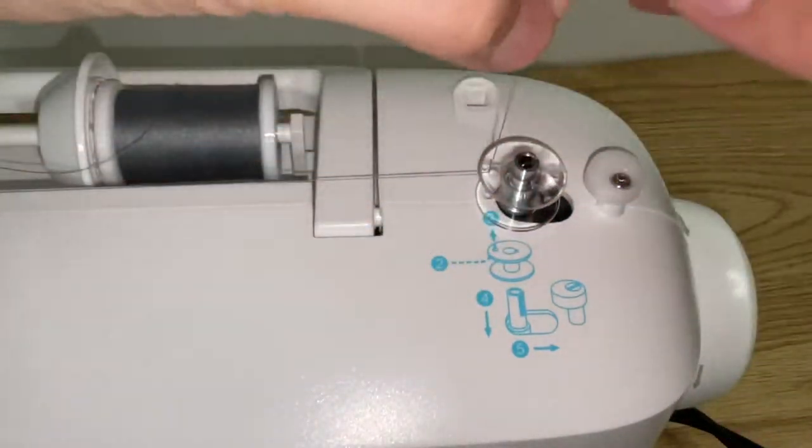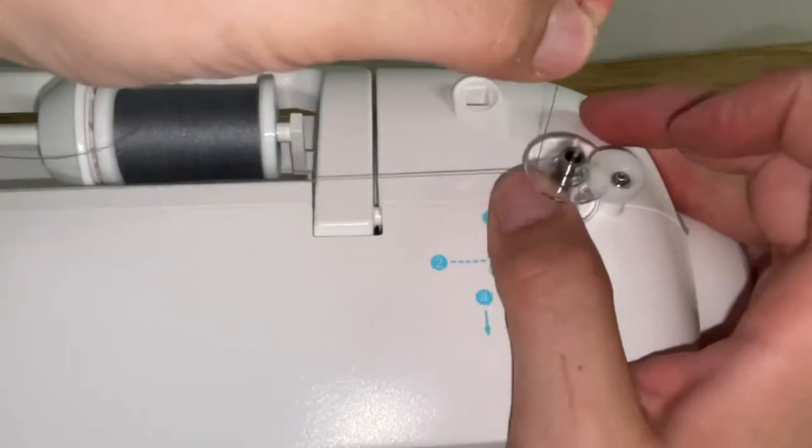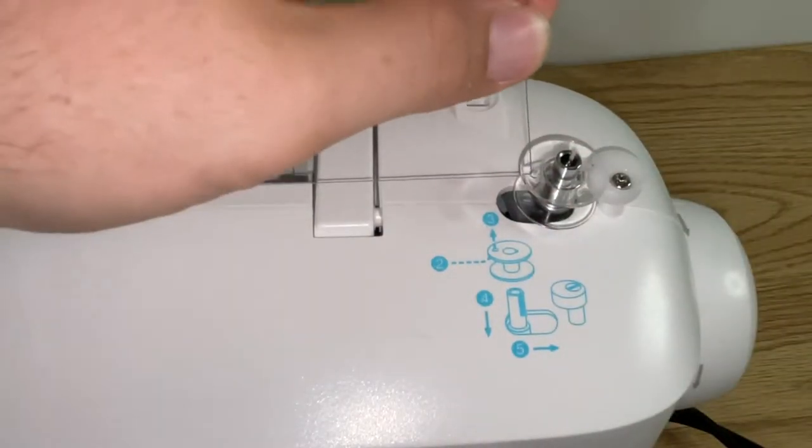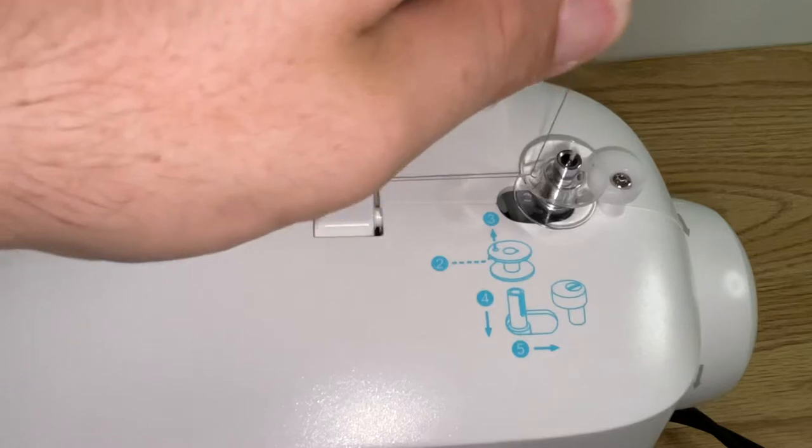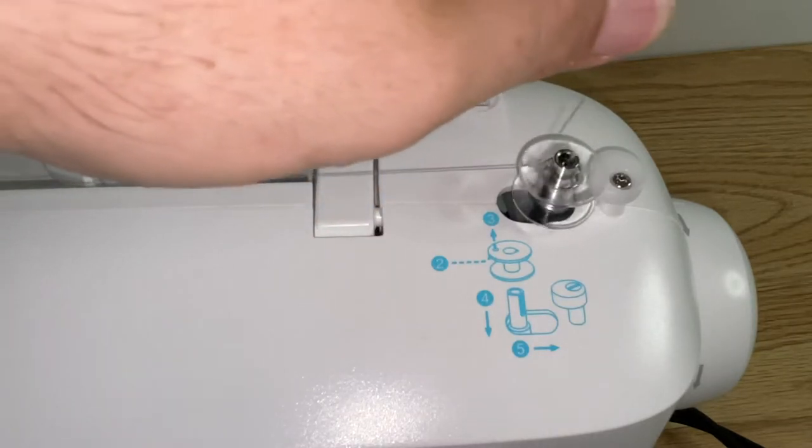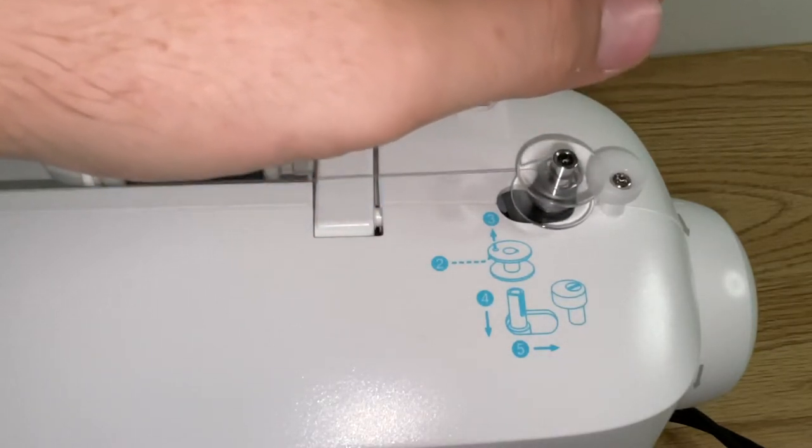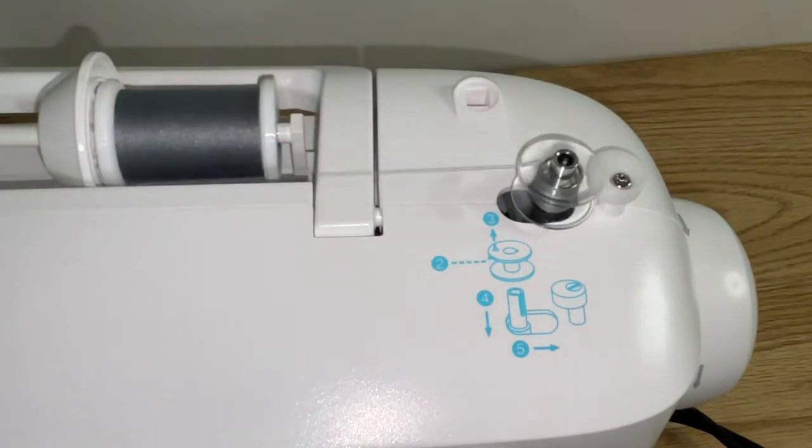Set your bobbin on top like that, push it over, and use your foot pedal now. And let it start winding. And it'll stop on its own when it's full.